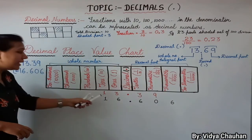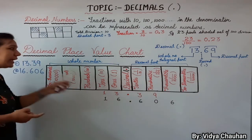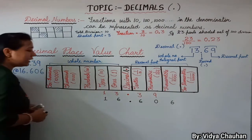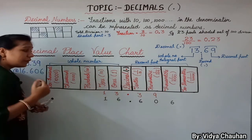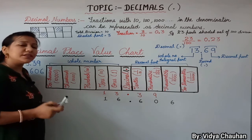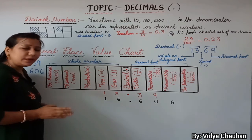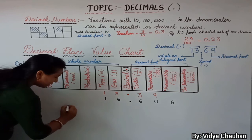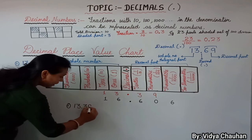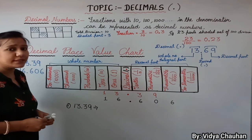This representation on the decimal place value chart helps you write number names. For writing number names there are two different methods — I will tell you both, and you may follow whichever is more suitable. Our first number is 13.39.